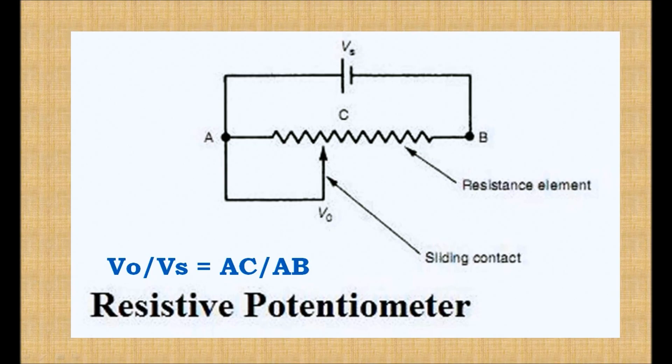The point C is the slider whose position is changed by the operator or by the motion of the body whose displacement is to be measured.